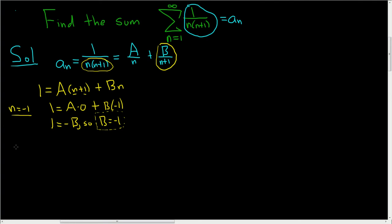To find a, we'll set n equal to 0 because that will make this term here 0. So 1 is equal to a times 0 plus 1 plus b times 0. So we end up with 1 equal to a. So that means a is equal to 1. And so that's our other constant.